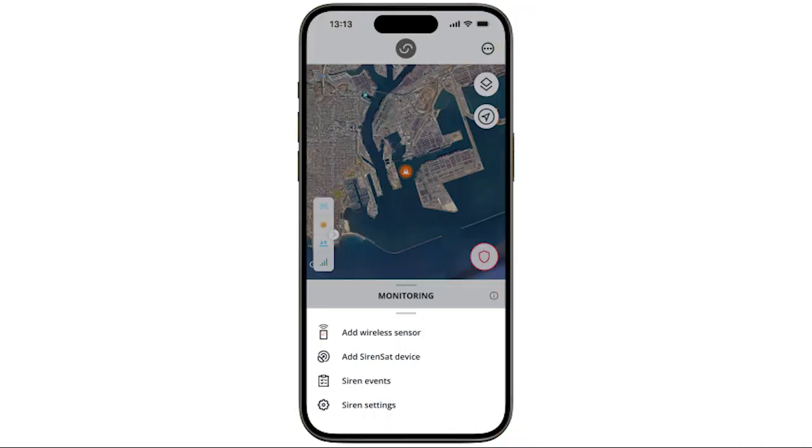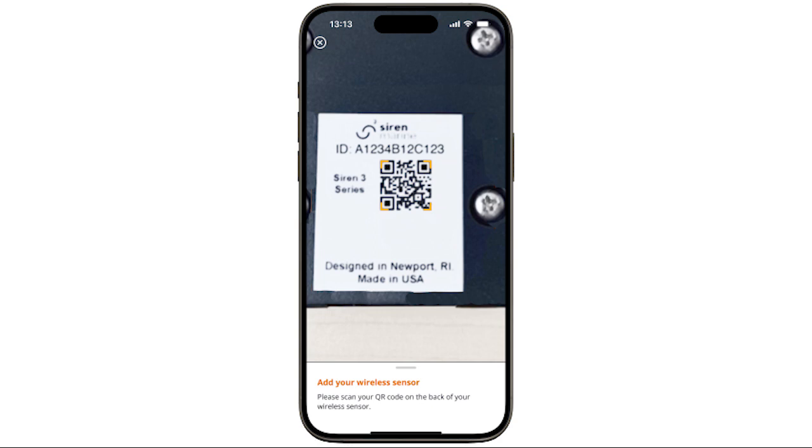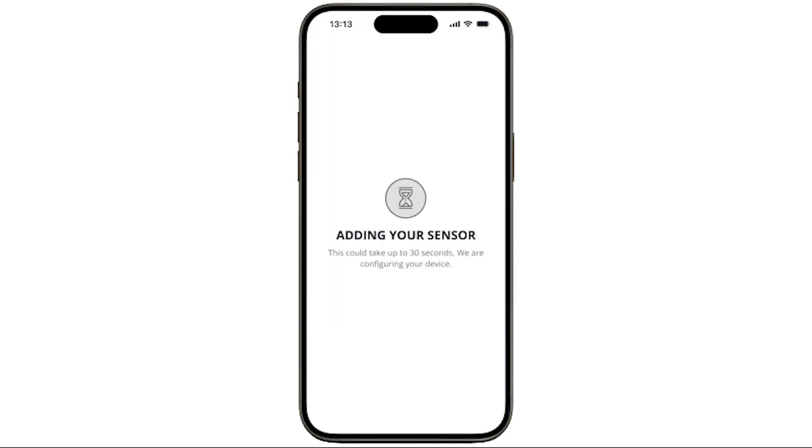Now open the Siren Marine app and go to Settings, Add Wireless Sensor. This will launch the QR code scanner. Now scan the QR code on the sensor and confirm the successful scan.